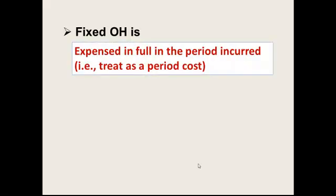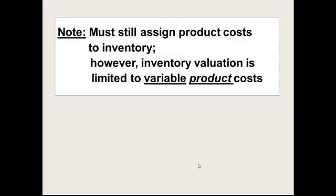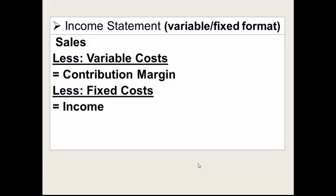Since fixed overhead is not assigned to inventory, the only other option is to expense it in the period incurred — treating it as a period cost on the income statement, similar to a selling and administrative expense, because of the behavior of that cost. You still assign variable product costs to inventory and only expense them when the inventory is sold — that has not changed — but it is limited to variable product costs.